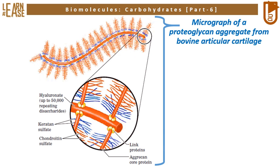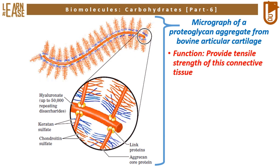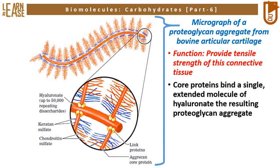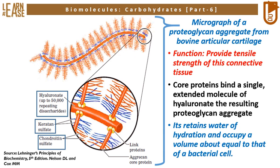A micrograph of a proteoglycan aggregate from bovine articular cartilage is shown. Bovine articular cartilage functions to provide tensile strength of this connective tissue. Core proteins bind a single extended molecule of hyaluronate to form the proteoglycan aggregate. The image shows hyaluronate, keratan sulfate, and chondroitin sulfate represented with lines and boxes, illustrating the organization of these components and core proteins in bovine articular cartilage.